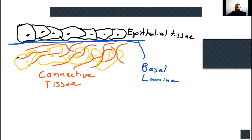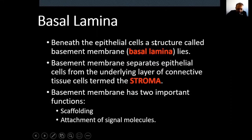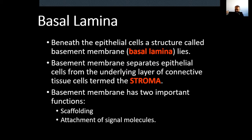Let's describe what basal lamina is. Beneath epithelial cells, a structure called basement membrane — also called basal lamina — lies. There is a border between connective tissue and epithelial tissue, which is called basal lamina. Basal membrane separates epithelial cells from the underlying layer of connective tissue, and that connective tissue part is called stroma. Basal lamina has two important functions. Stroma is the connective tissue part, which in cancer contexts is also relevant to carcinoma — we are going to see these in future lectures.